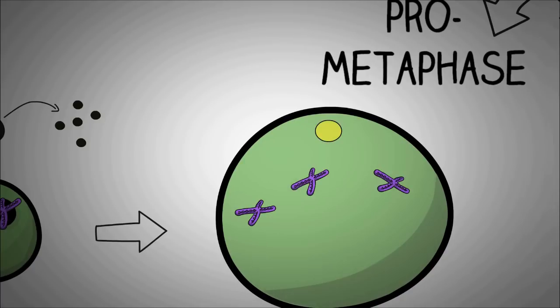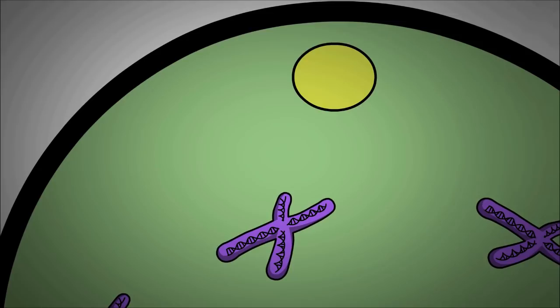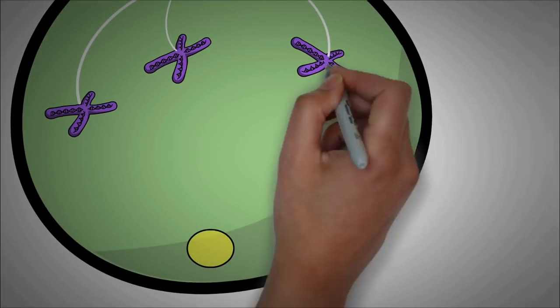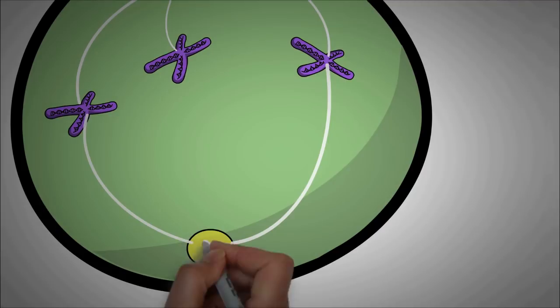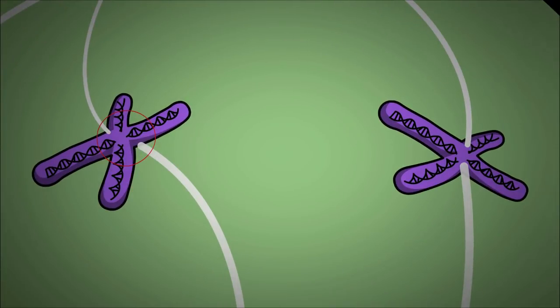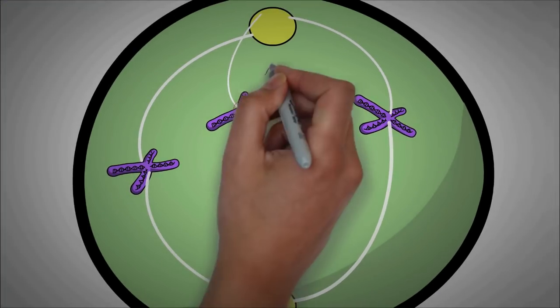Then comes the role of mitotic spindle. The microtubules from the spindle attach to the centromere of the chromosomes. And if you look closely, you can see that two microtubules attach to one centromere.